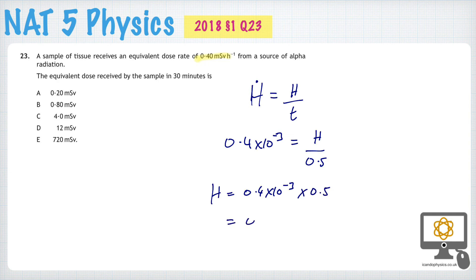So, that, of course, is going to give us 0.2 times 10 to the minus 3, and the units will be Sieverts, which is also equivalent to 0.2 millisieverts.